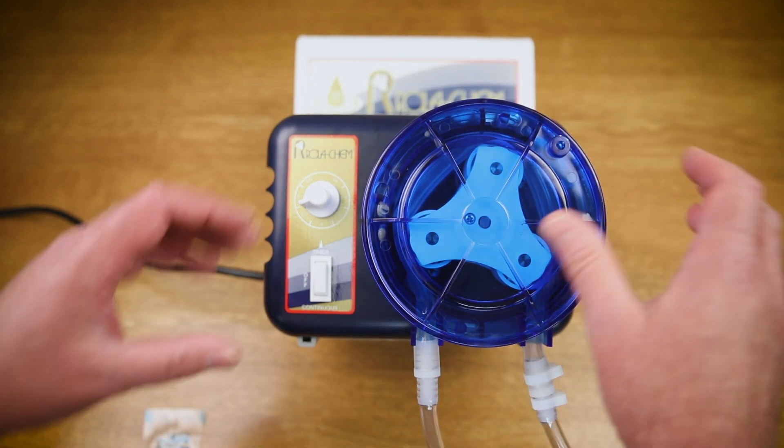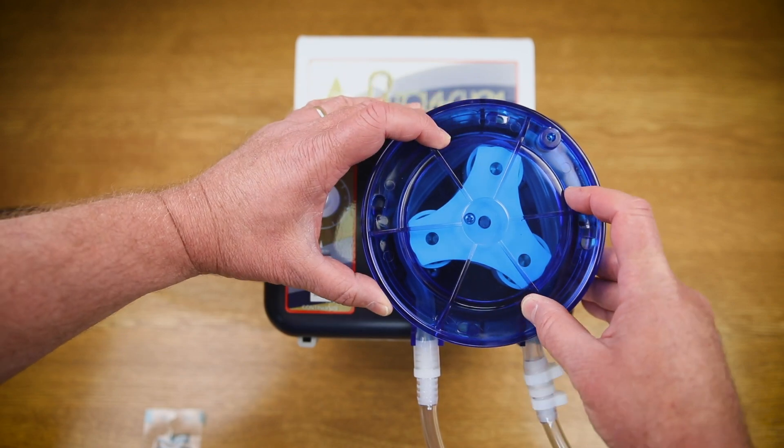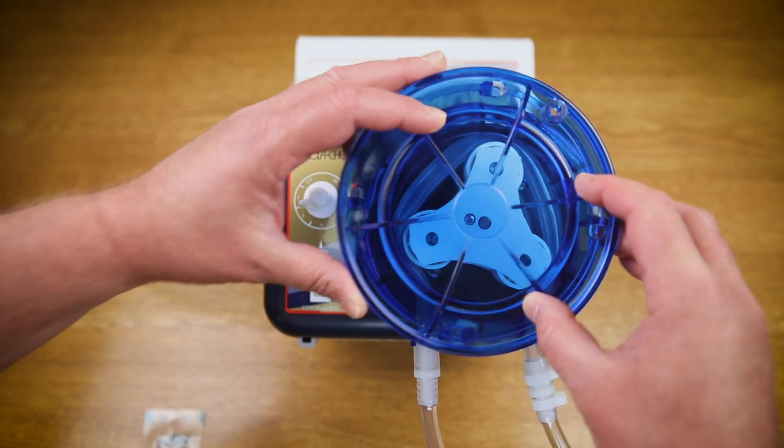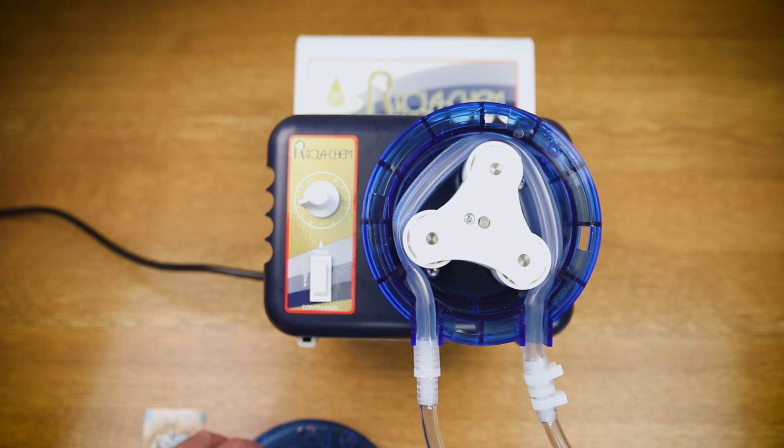Then take the front plate, turn that counter clockwise and remove. This exposes the roller and the roller assembly.